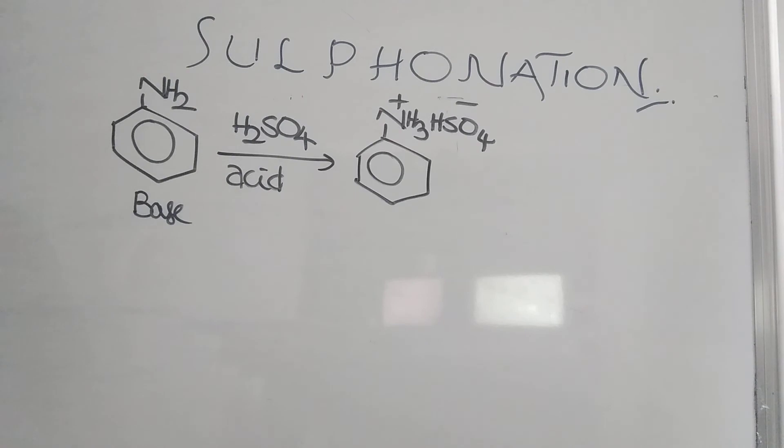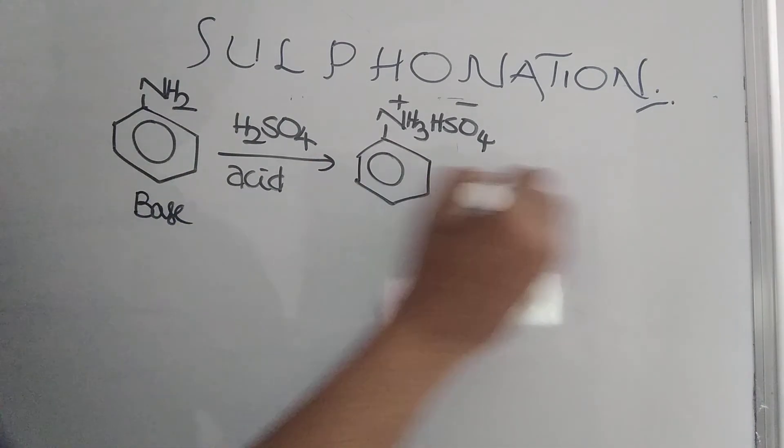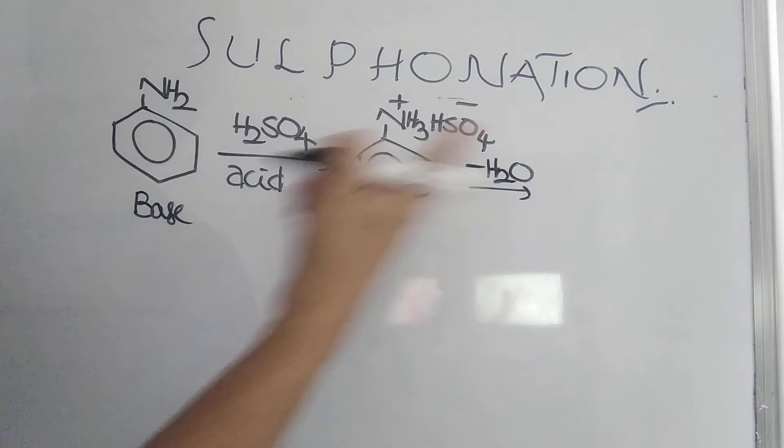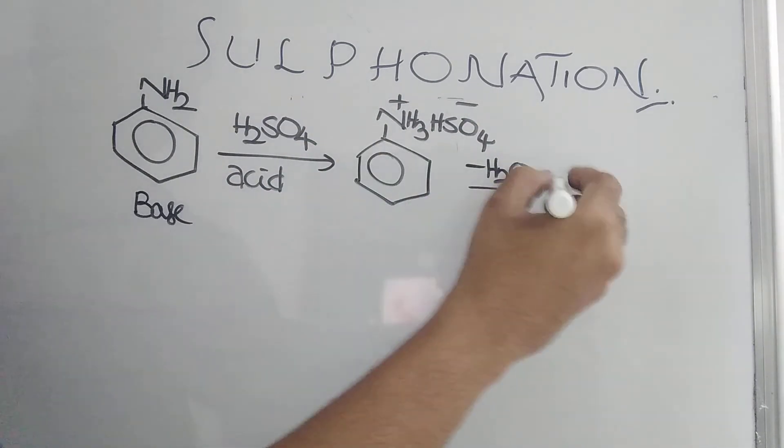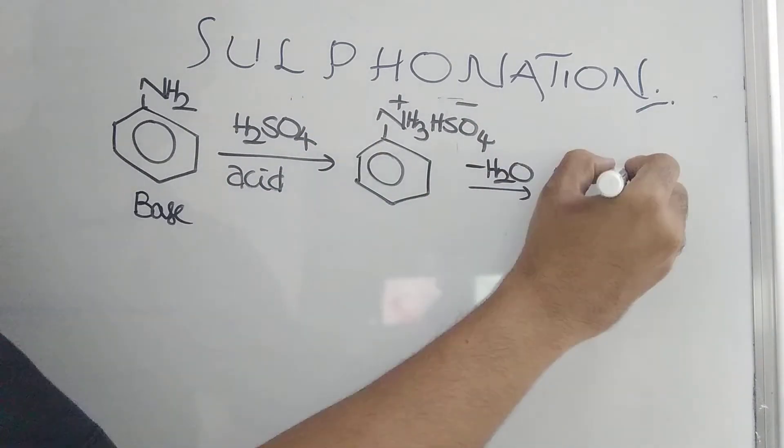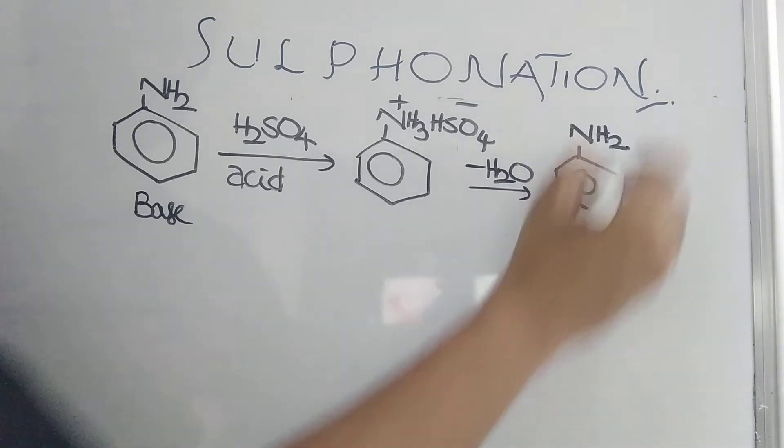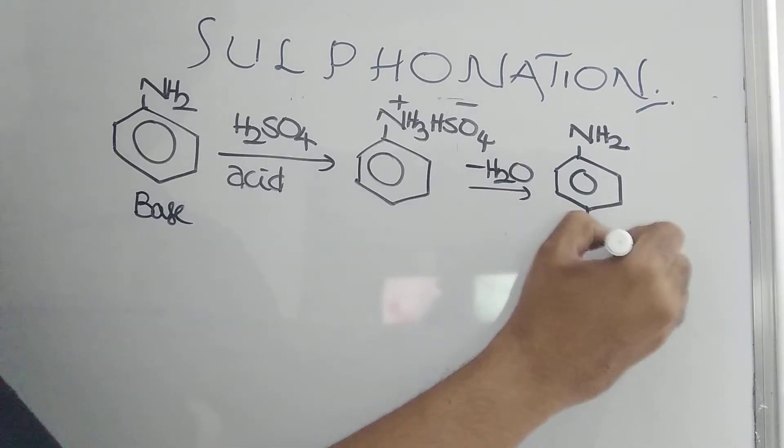From that, you can remove one water molecule. Like neutralization, acid and base type. One water molecule will be lost. So, when H2O is gone, this will be shifted to NH2 and SO3H.